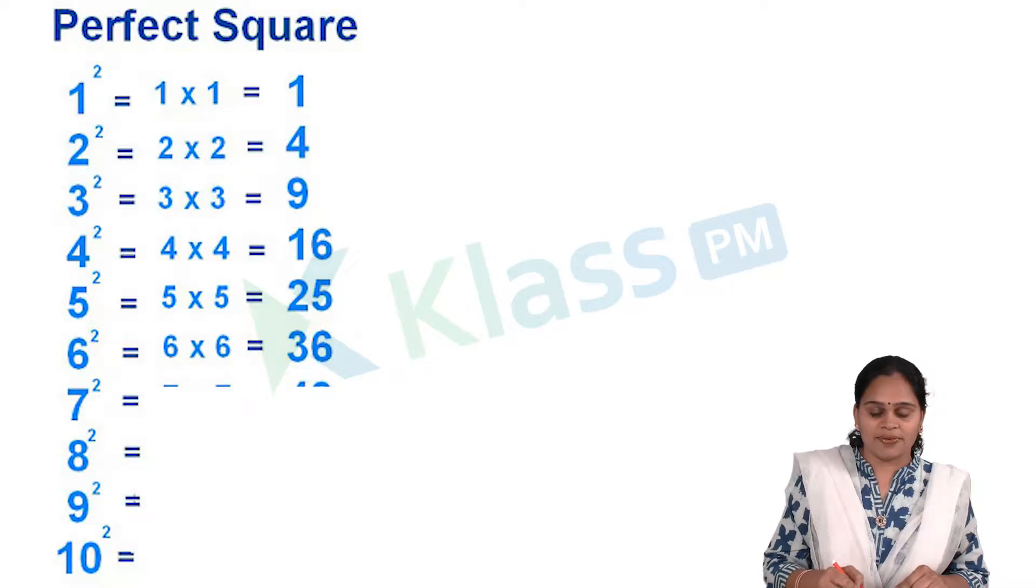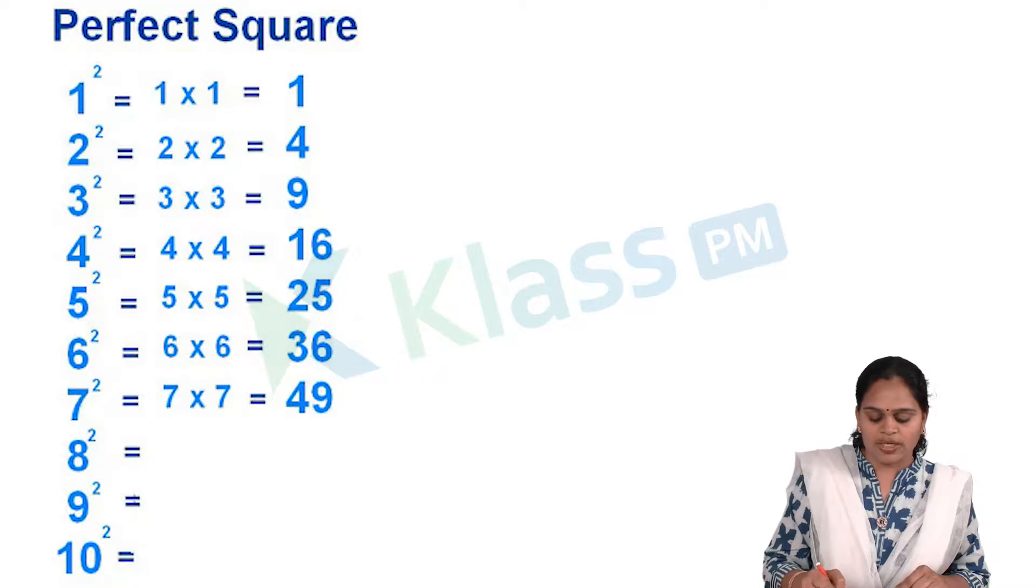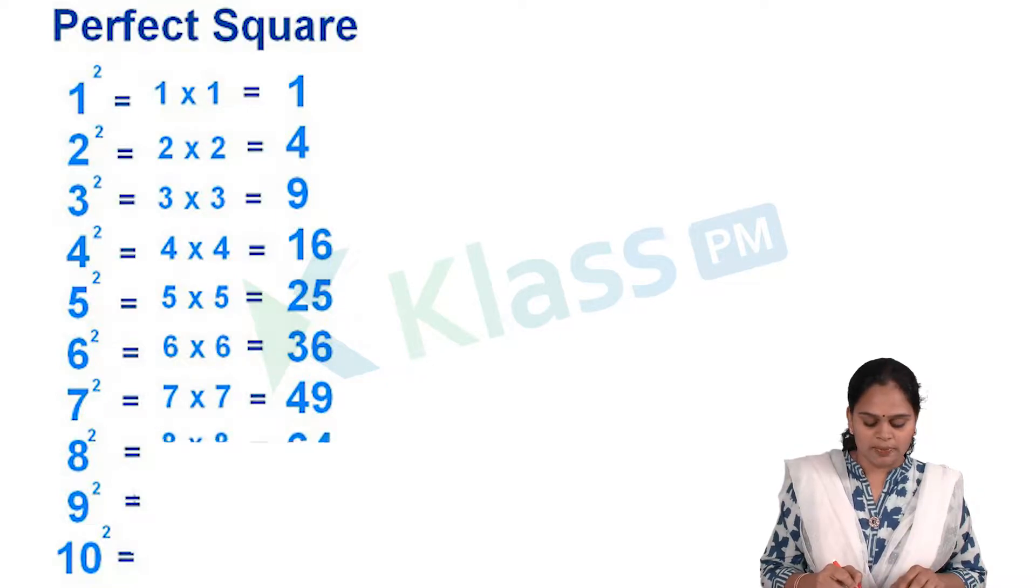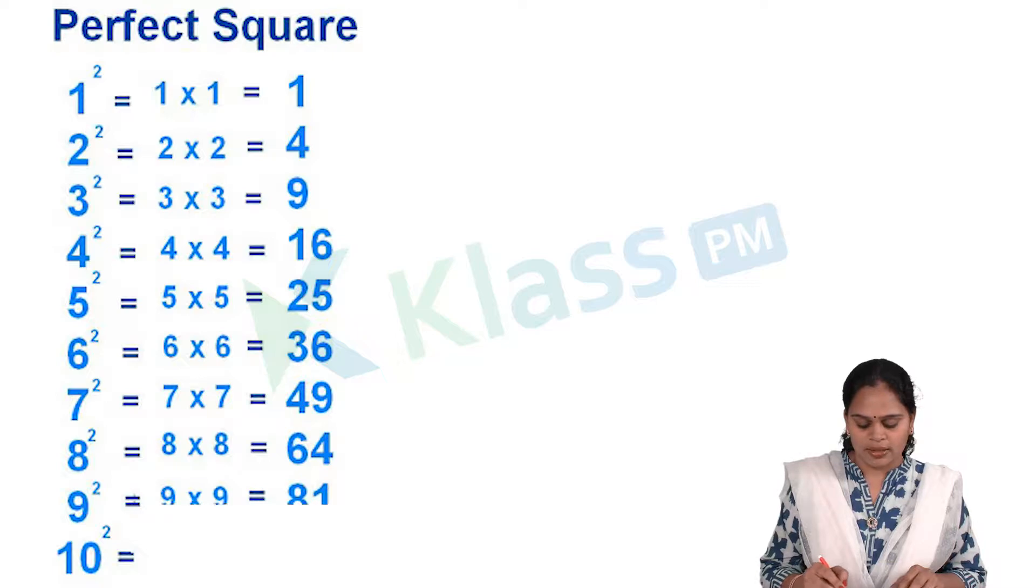Now you tell me what is 7 square? 7 into 7, that is 49. 8 square, 8 into 8, 64. 9 square, 9 into 9, 81.